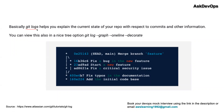Git log is a command that will help you to explain the current state of your repo with respect to the commits and other information. I have shared a screenshot here from Atlassian, and you can see the output of Git log will look something like this. Here it is showing the master commit, and after that there were some previous commits that were added.